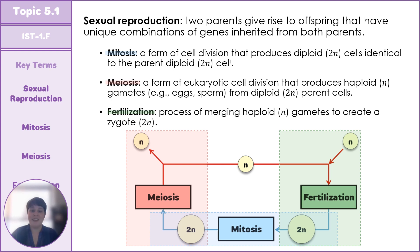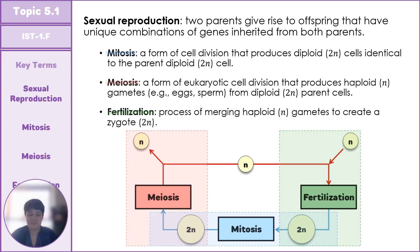Two gametes formed via meiosis can fuse through the process of fertilization, bringing it full circle. These two haploid sex cells fuse to form a zygote, which almost immediately begins mitosis once more, eventually giving rise to a fully developed offspring.